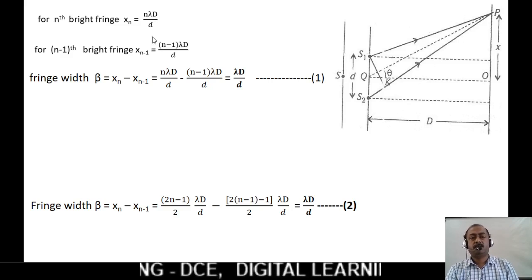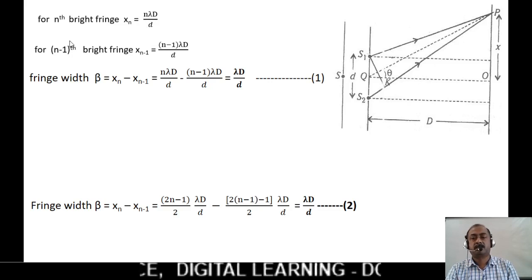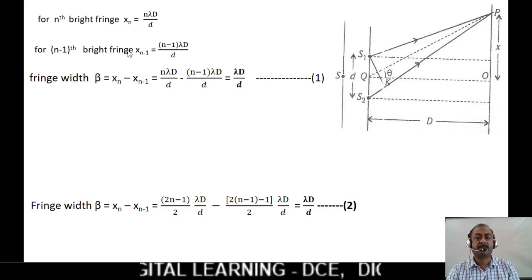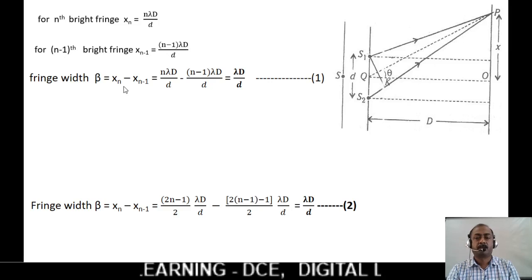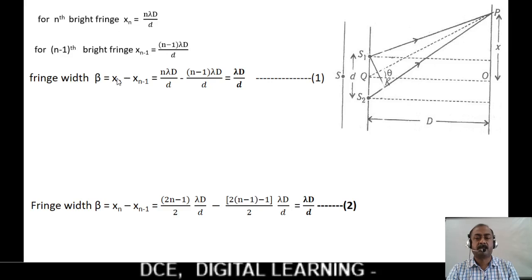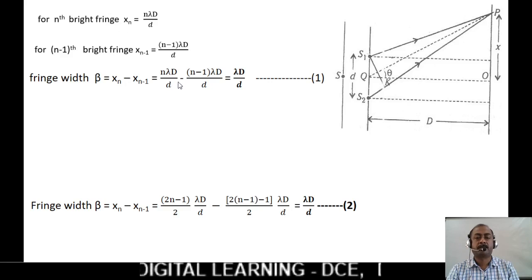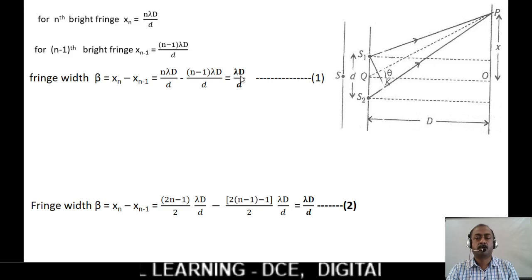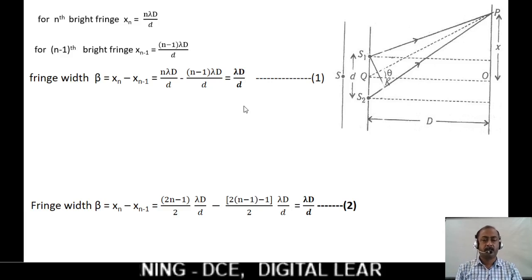For the nth bright fringe: xₙ = nλD/d. For the (n−1)th bright fringe: xₙ₋₁ = (n−1)λD/d. Fringe width is the distance between two consecutive bright fringes: xₙ − xₙ₋₁ = nλD/d − (n−1)λD/d. The difference gives fringe width = λD/d. Let this be equation 1.